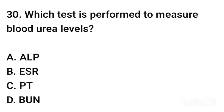Question number 30. Which test is performed to measure blood urea levels? The correct answer is option D: BUN (Blood Urea Nitrogen).